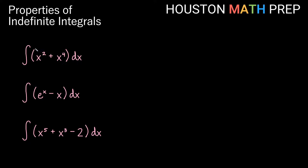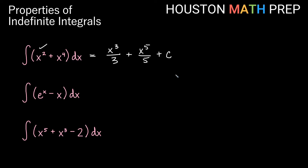Let's look at some examples. We have the integral of x squared plus x to the 4 with respect to x. Doing this one term at a time, both are power rules. The antiderivative of x squared: add 1 to the power and divide by the new power, giving x cubed over 3. Then x to the 4 gives x to the 5 over 5. Don't forget your plus c, your constant of integration.